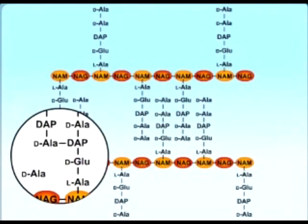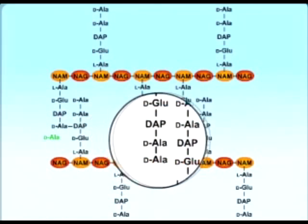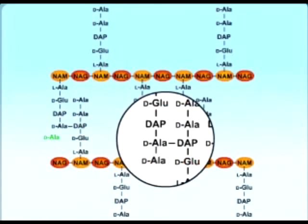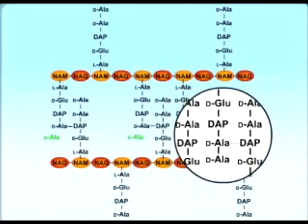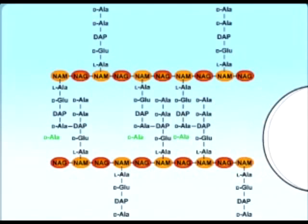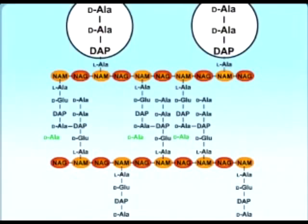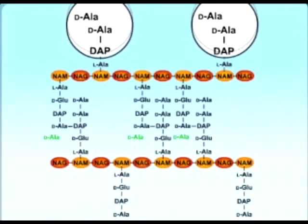In E. coli, the free amino group of diaminopimelic acid is linked to the carboxyl group of the subterminal D-alanine, releasing the terminal D-alanine. Other enzymes remove the terminal D-alanine from side chains that are not cross-linked.